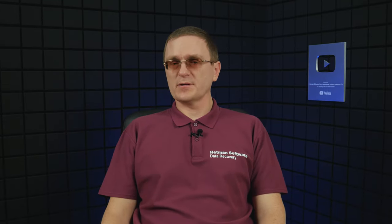The copy-on-write feature: in most file systems, data is lost forever when overwritten. In ZFS, however, the new information is written to a different block. When the write operation is complete, the file system's metadata is updated to point to the new information. This helps to preserve the old data if the system crashes or if another unfortunate event happens.